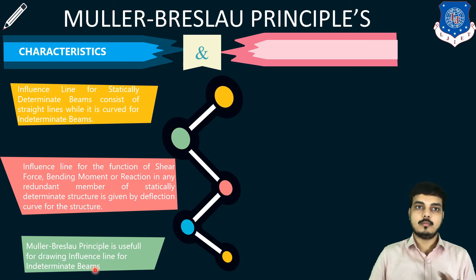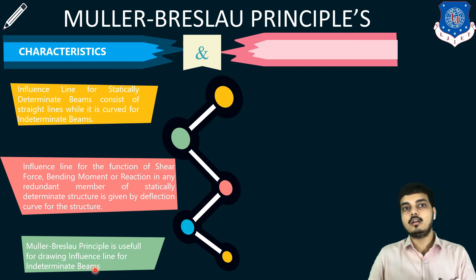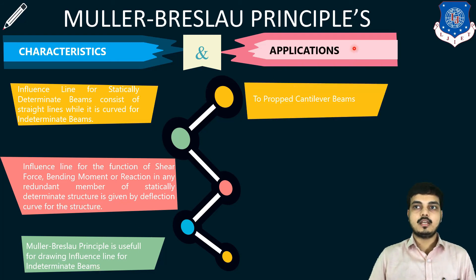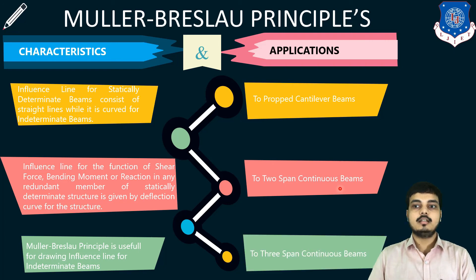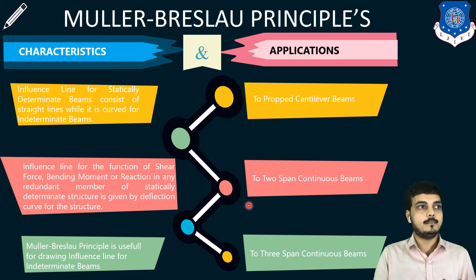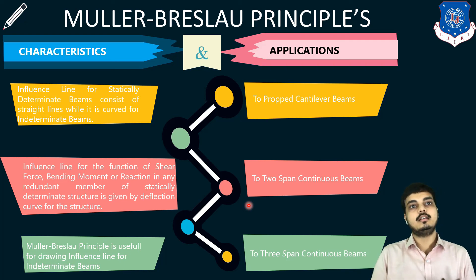Regarding determinacy and indeterminacy, you may recall static indeterminacy formulas such as R minus r, where R stands for reactions and r stands for equilibrium conditions. As for the applications of the Müller-Breslau principle, it can be applied to a propped cantilever beam, a 2-span continuous beam, and a 3-span continuous beam. So it can be used in varying kinds of indeterminate structures, wherever the structure is indeterminate.